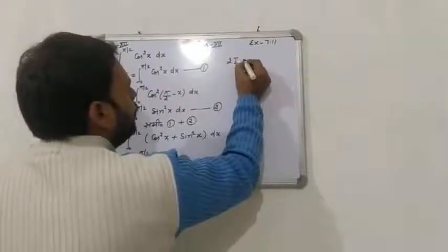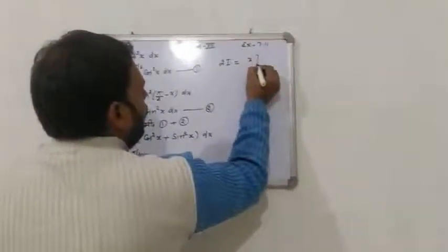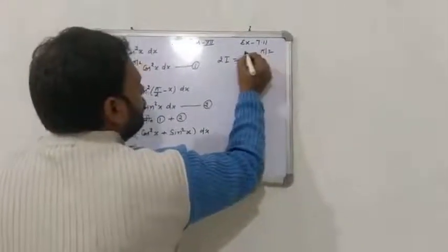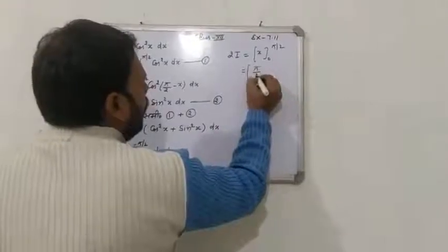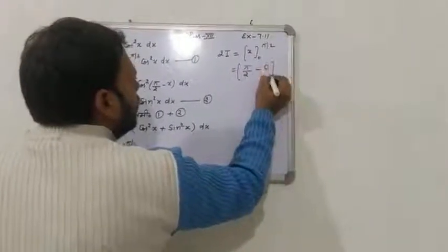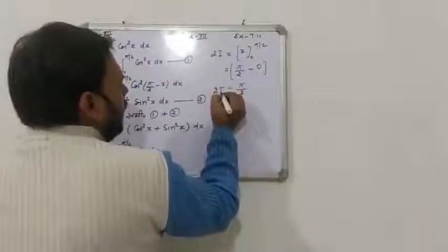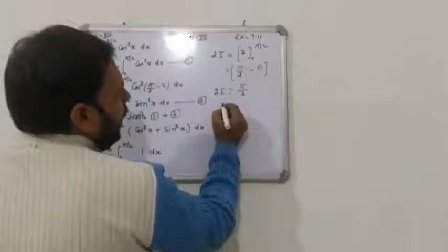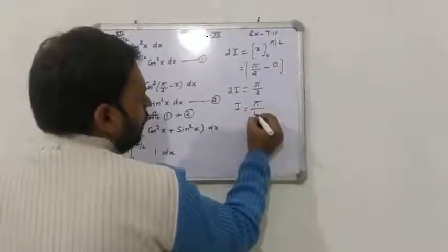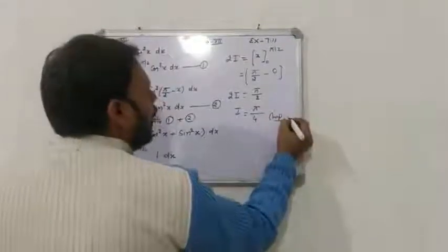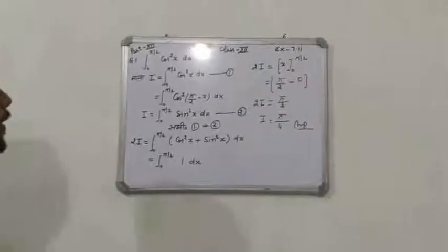2I is equal to ∫₀^(π/2) 1 dx. 1 का integral आप जानते हैं — x, limit 0 से π/2. अपर लिमिट put करी π/2, minus lower limit 0, तो 2I = π/2. इस 2 को उधर ले आए: I = π/4. यही आपका answer है। Clear? आगे देखते हैं।